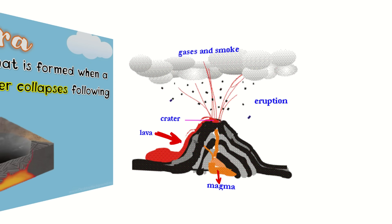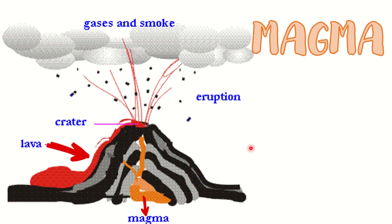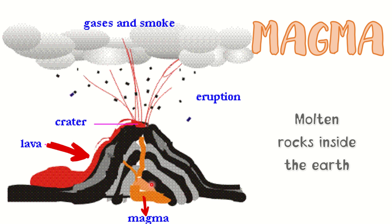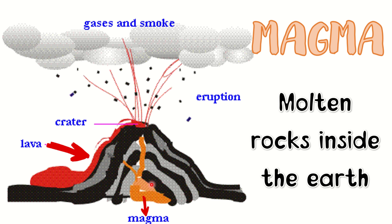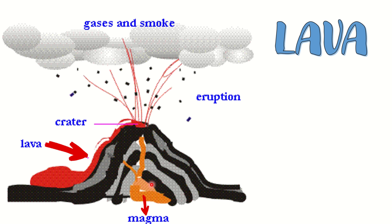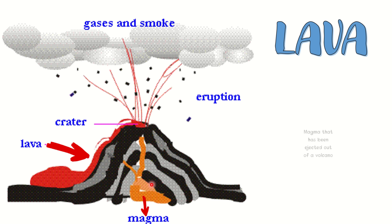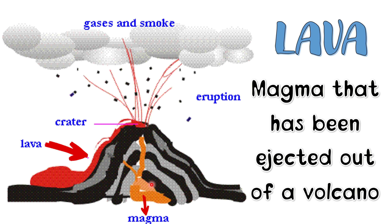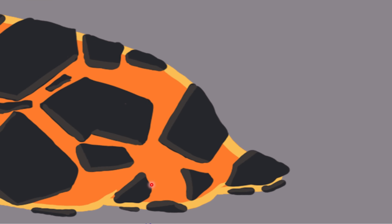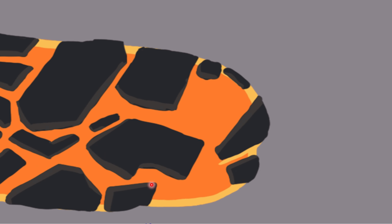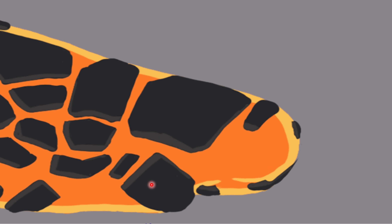When we say magma, it is a hot fluid or semi-fluid material below or within Earth's crust that is usually made from molten rocks. When the magma is ejected out of a volcano, it is now called lava. Lava is an Italian word which means to slide, which is what molten rocks do once they reach the surface.